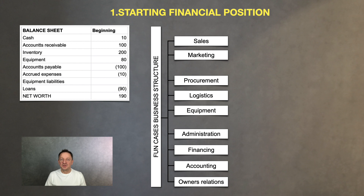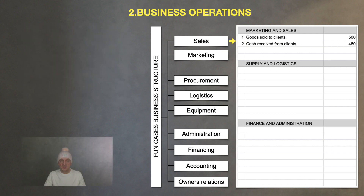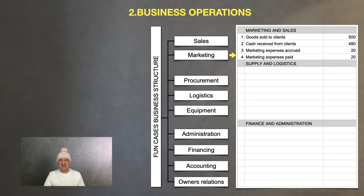Now guys, imagine that six months have passed quickly and our management team have been working tight. Let's go back to them and ask about all the business transactions they conducted over this period. We sold goods for $500K on credit and received $480K in cash. The rest is still in accounts receivable and we will collect it later. My marketing expenses were $20K, all paid in time, so there are no liabilities left.